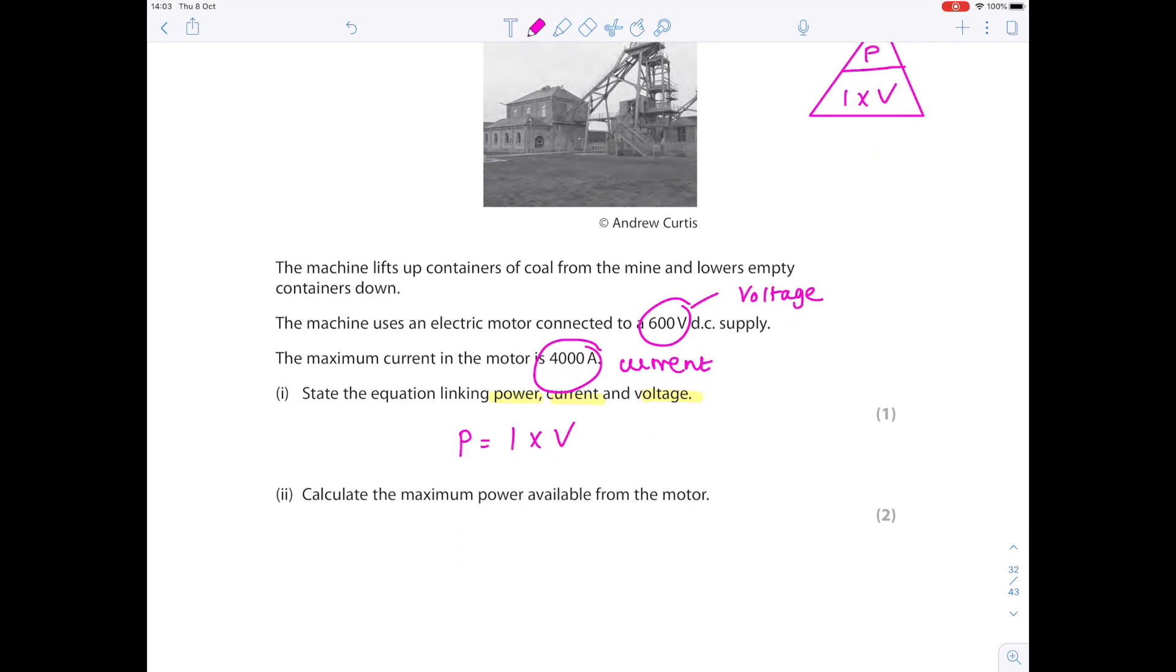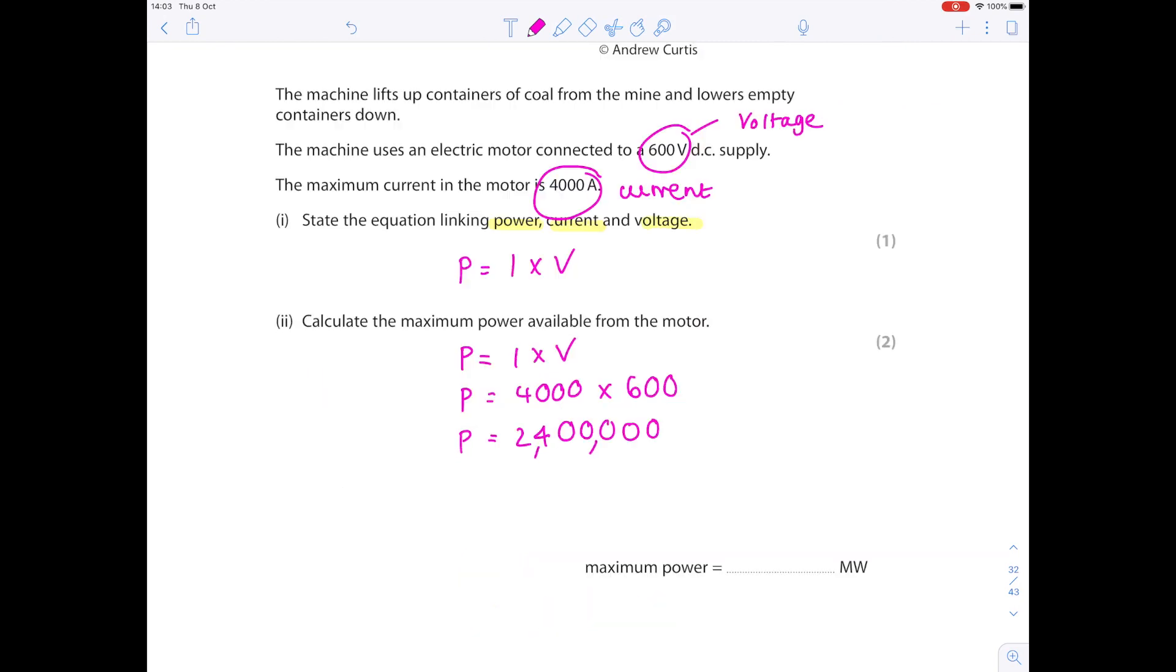Calculate the maximum power available from the motor. So again I'm writing out the equation I'm using. Keep everything nicely lined up to make whoever's marking its life easier. So it's 4000 times the voltage which is 600. So here's your final answer: 2,400,000, and that's going to be in watts. Check your units. You're being asked for your units in terms of megawatts. So you need to divide your answer by a million to convert that appropriately to get a value which is 2.4 megawatts.